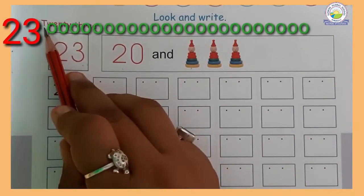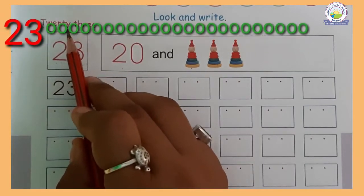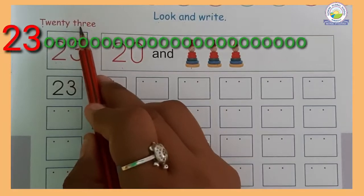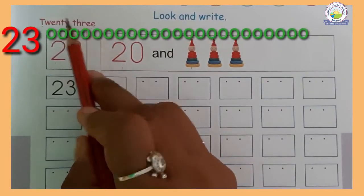T-W-E-N-T-Y, twenty. T-H-R-E-E, three. 23.